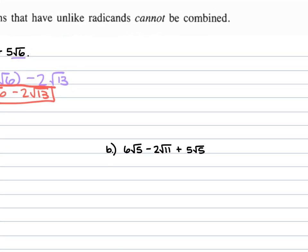For part B, we have 6 square root of 5 minus 2 square root of 11 plus 5 square root of 5. The 6 square root of 5 and the 5 square root of 5 are like terms: 6 plus 5 is 11 square root of 5 minus 2 square root of 11.